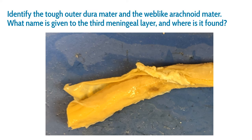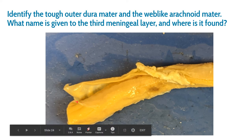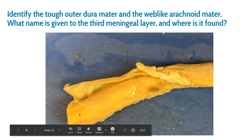Identify the tough outer dura mater and the web-like arachnoid mater. The dura is pretty easy to see — it's coming off the spinal cord and is compared to leather. Then we can see the top of the arachnoid right here, peeling off in places. The pia mater is right underneath; you can't really see it, but imagine it like cling film holding the spinal cord together. You might have some success peeling some of it off depending on your hands.